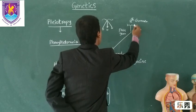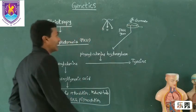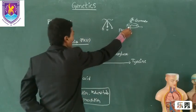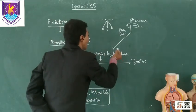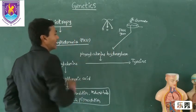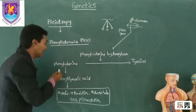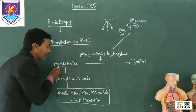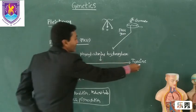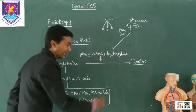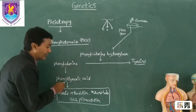Now, when this PAH gene is mutated, the phenylalanine hydroxylase enzyme will not be released in the body. Due to the absence of phenylalanine hydroxylase, phenylalanine converts into phenylpyruvic acid instead of converting into tyrosine.